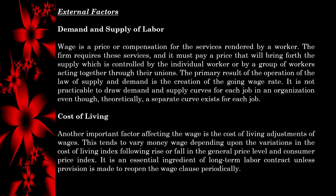There are some external factors that should be considered in determining employee compensation. The first is demand and supply of labor. Wages are a price or compensation for services rendered by a worker. The firm must pay a price that will bring forth the supply, which is controlled by the individual worker or by a group of workers through their unions. The primary result of the law of supply and demand is the creation of the going wage rate.